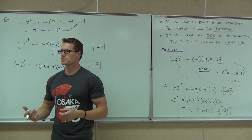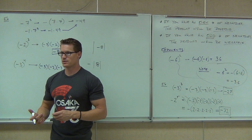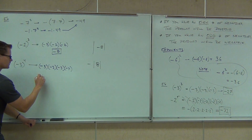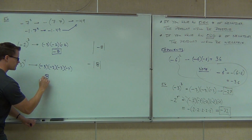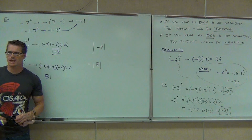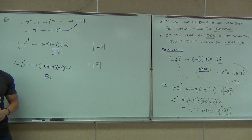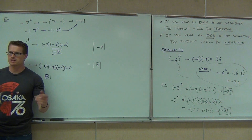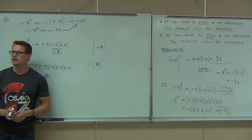Are we going to get a positive or a negative here? 3 times 3 times 3 times 3 is 81. The way you can do that, do 9 times 9. 9 times 9 is 81. That's fine.